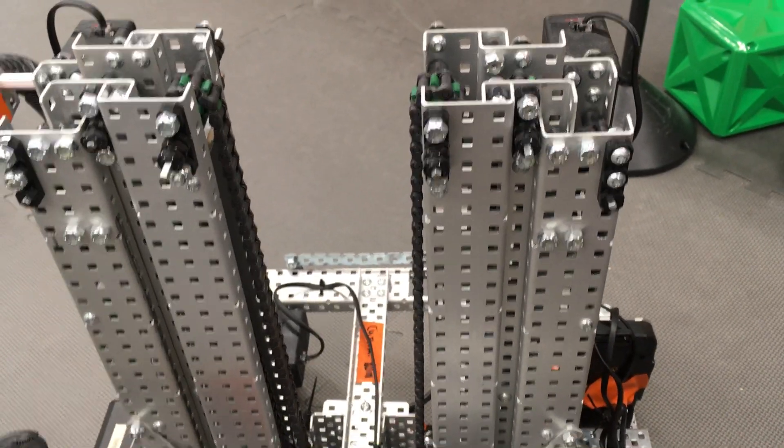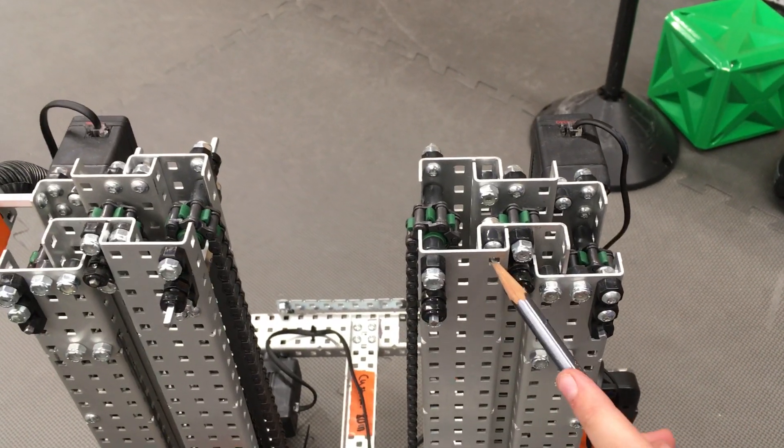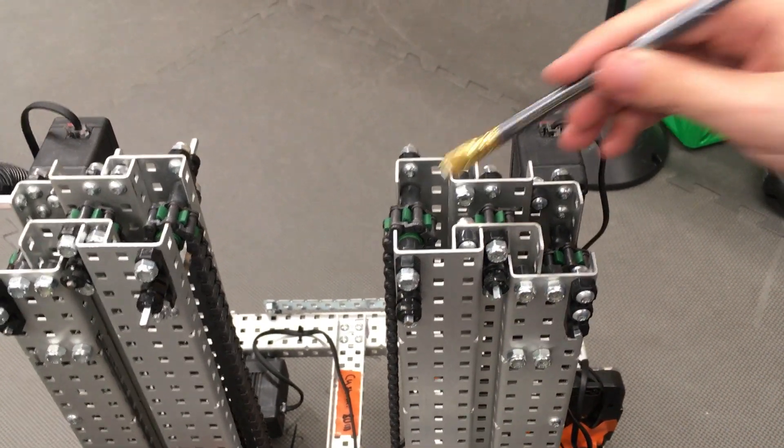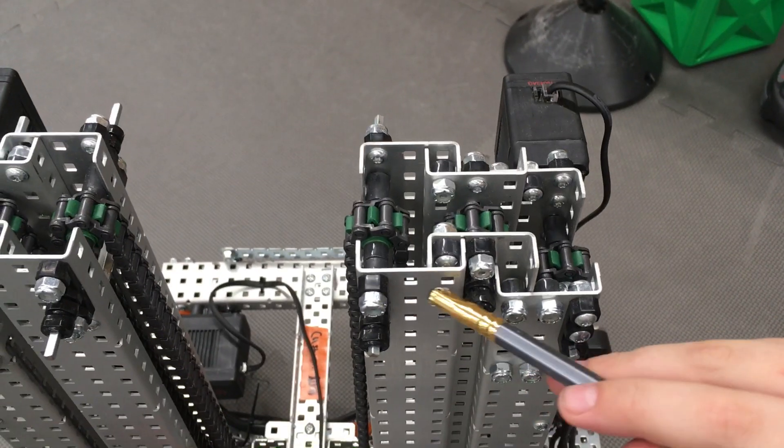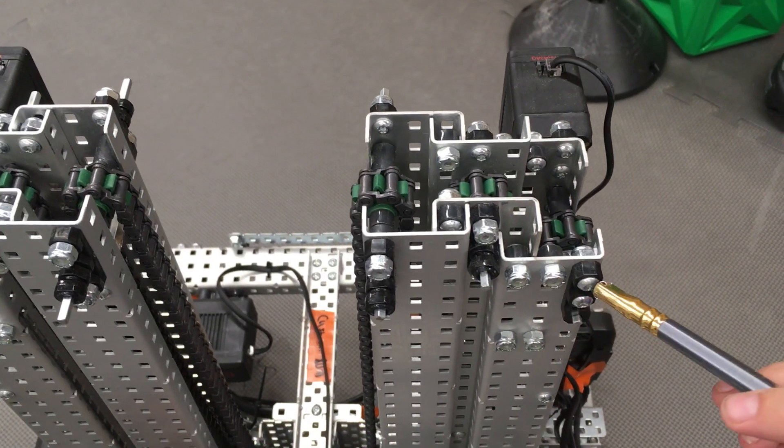And this was because you had to have at least two holes between each bracket. As you can see here, you had two holes right there, then bracket, two holes, bracket.